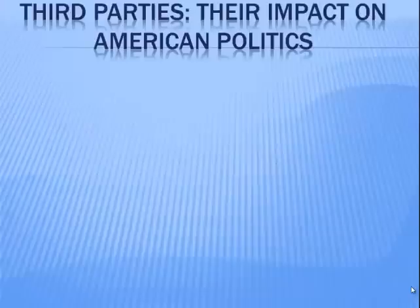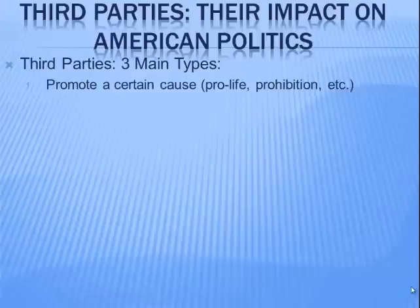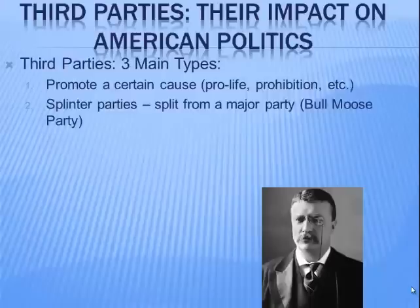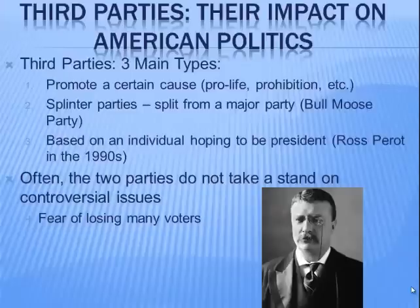There are three main types of third parties. First, those that promote a specific cause — maybe pro-life or prohibition. Second, splinter parties that split from a major party, such as Teddy Roosevelt splitting from the Republicans in 1912 to run on the Bull Moose Party ticket. Third, parties built around an individual, like H. Ross Perot in 1992 and 1996. Often the two major parties avoid taking stands on controversial issues to avoid alienating large portions of voters, so they just play it safe.